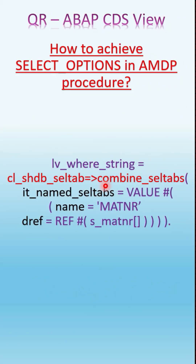There is a class and method that helps you convert the select option values into a string variable. That is CL_SHDB_SELTAB=>COMBINE_SELTABS. You have to pass three parameters: the ID name, the SELTAB (which is the value name, for example MATNR as a data element), and the SREF, which is your select option variable. This way you are able to generate the select option statements as a string.